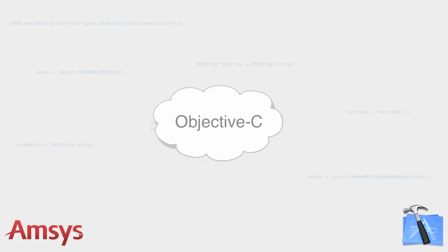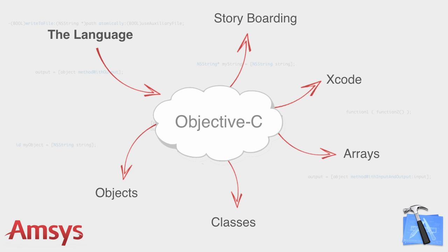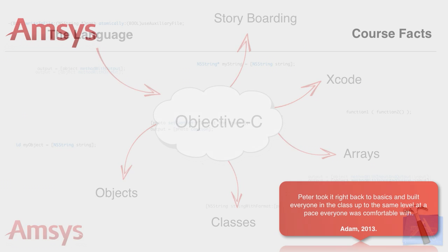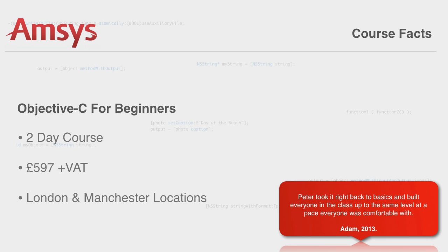iOS apps are built using Objective-C, the language used to create the functions and elements that we see in apps that we use every day. If you have no experience with C or Objective-C, we recommend that you take our two-day intensive Objective-C for beginners course, delivered by our app developer and Apple master IT trainer, Richard Mallion.